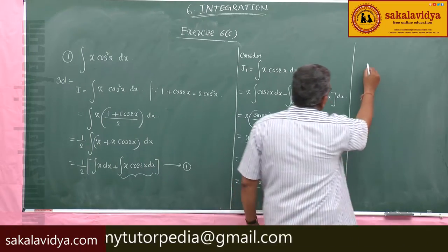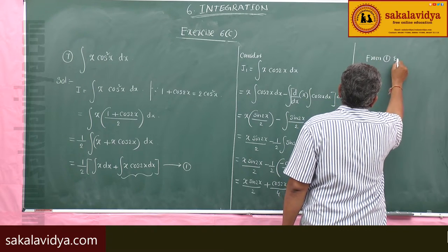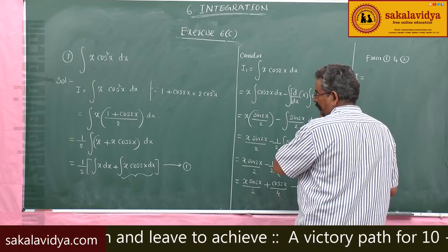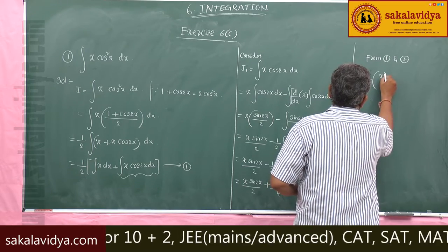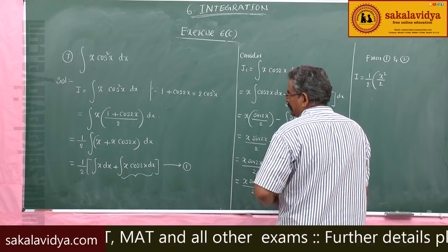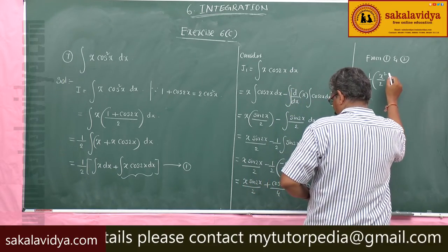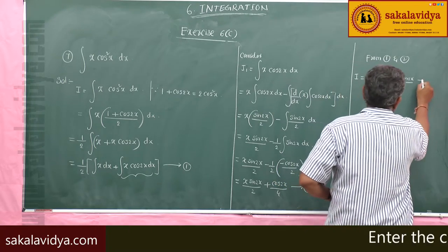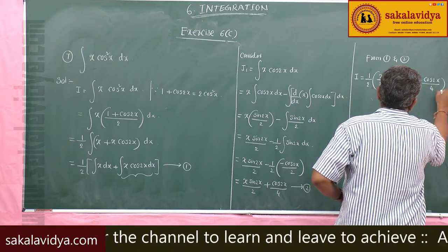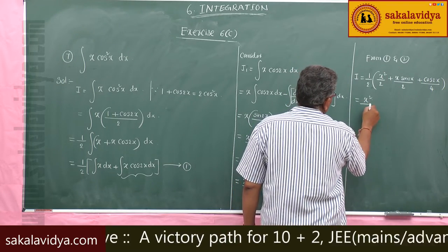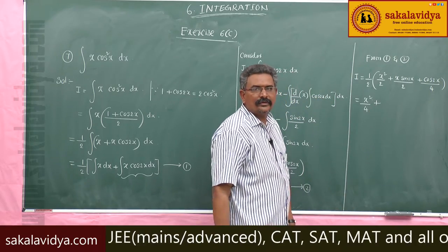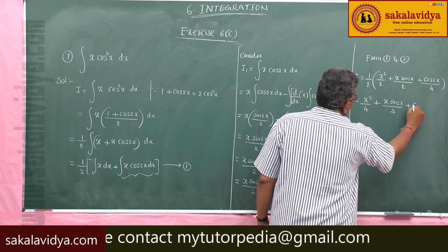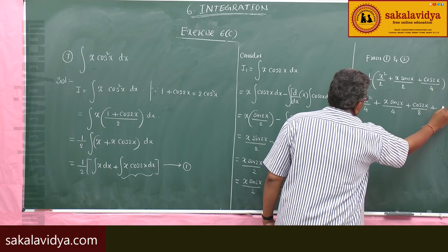From equations 1 and 2, I equals one-half times [x²/2 plus x sin(2x)/2 plus cos(2x)/4], which gives x²/4 plus x sin(2x)/4 plus cos(2x)/8 plus the constant of integration.